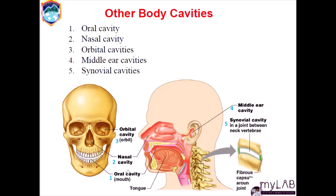There are also other cavities, especially in the skull. The first is the oral cavity. Number two is the nasal cavity. Number three is the orbital cavity, where we have the eyes. Number four is the middle ear cavity — remember, cavities are spaces. Number five is the synovial cavity found between the vertebral bones, which is the joint between the neck vertebrae. So these are other body cavities found in our skull.